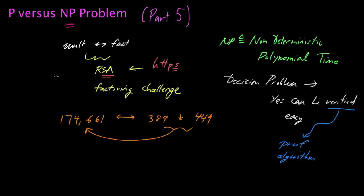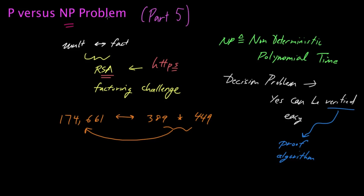It stands for problems that references decision problems where the yes answer can be verified easily. And I gave you some intuition around that by describing this factoring problem. And moreover, the P part of P versus NP we know stands for polynomial time. And so now you actually understand the basics behind what the P versus NP problem asks for.